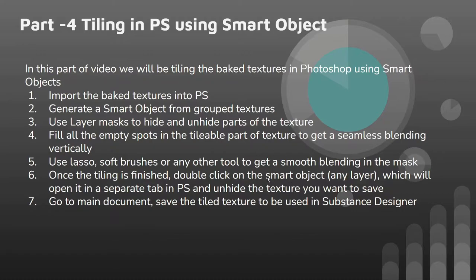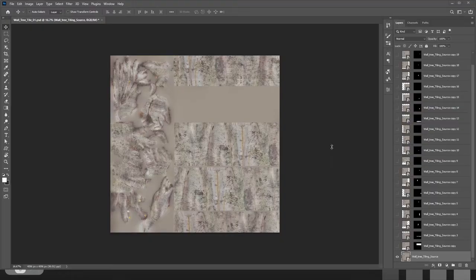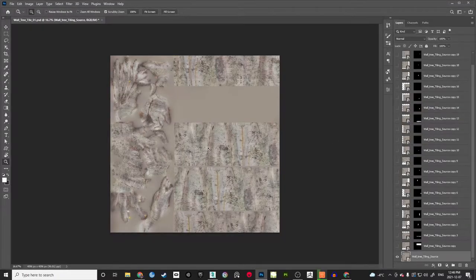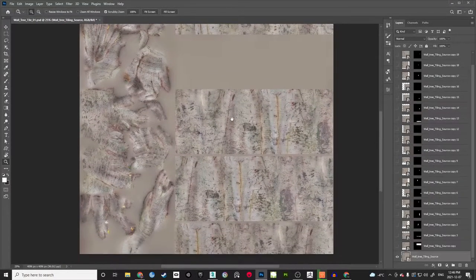I will show you how it is done in Photoshop. Once the tiling is done, we will double click on the smart object in the main document to open it in a separate tab inside Photoshop, where we can hide and unhide whichever texture we want to save. You will understand when I show it.